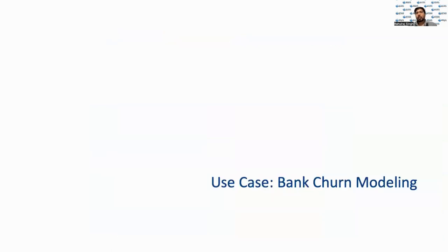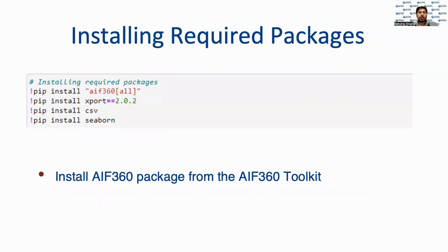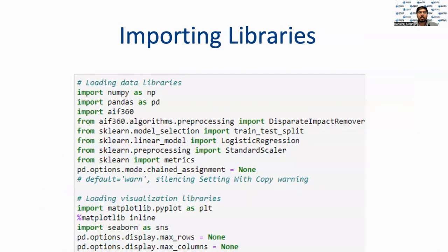For understanding this framework through a case study, we will apply the disparate impact remover algorithm to a bank churning model dataset. We work with the churn modeling dataset available from Kaggle. This dataset has 14 attributes that describe churn behavior and presents a binary classification problem: whether customer churn occurs or not — that is, whether the customer will close their account. First, we install the required packages and import the necessary libraries before moving forward.